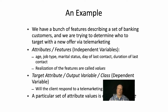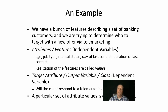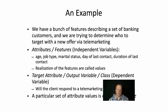These features could include things like the age of the customer, their job type, their marital status, the day of the last contact by one of the agents who are trying to convince them to buy the new offer, and the duration of the last contact. There's just a bunch of data about the individual. The realization of those features are called the values. So if the age is 42, then 42 is the value, and the feature is age.